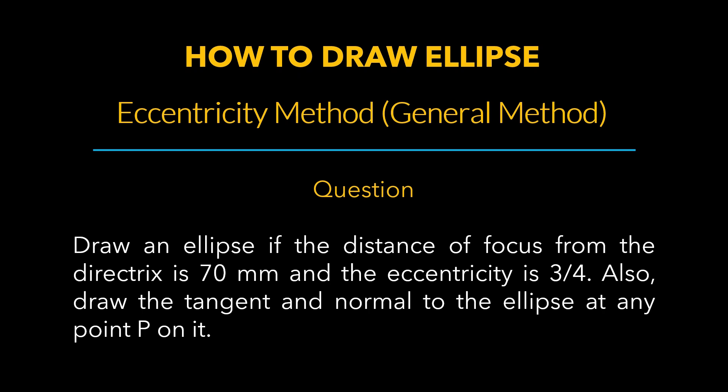The question reads like this: Draw an ellipse if the distance of focus from the directrix is 70mm and the eccentricity is 3/4. Also, draw the tangent and normal to the ellipse at any point P on it.